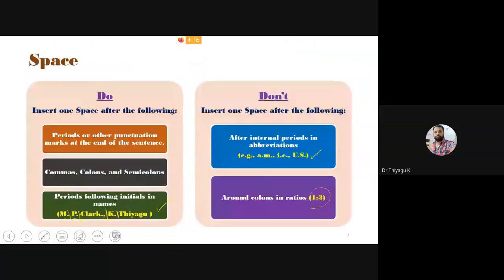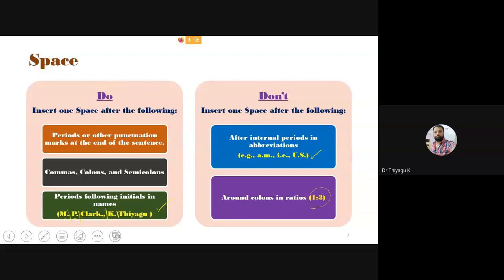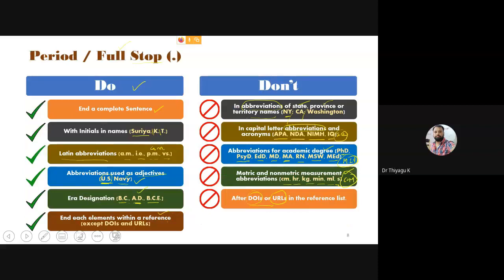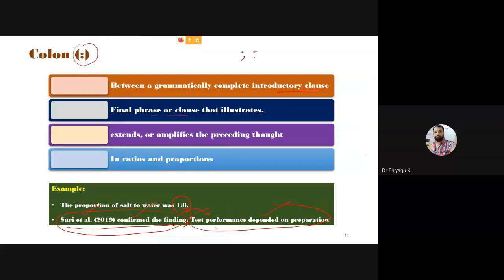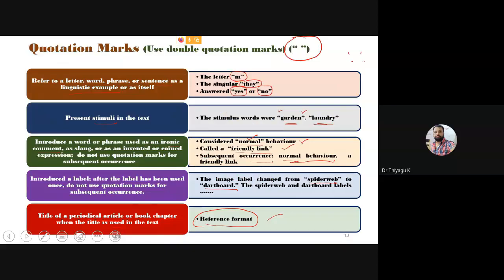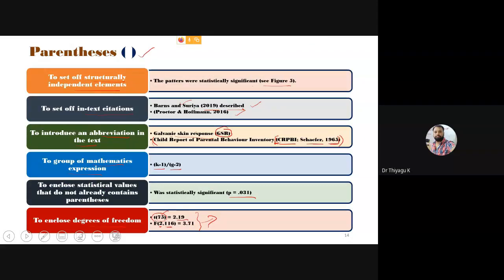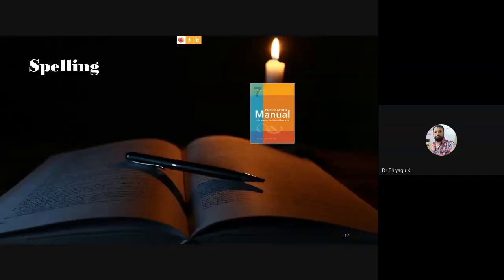To summarize the punctuations we discussed: comma, semicolon, colon, period, question mark, dash, parentheses, square brackets, and slash. We discussed where to use spaces and where not to; where to use full stops and where not to; comma, semicolon, colon, dash — M-dash and N-dash; quotation marks — in APA, double quotation mark only; parentheses; square brackets; and slash. These are all the members of punctuation.